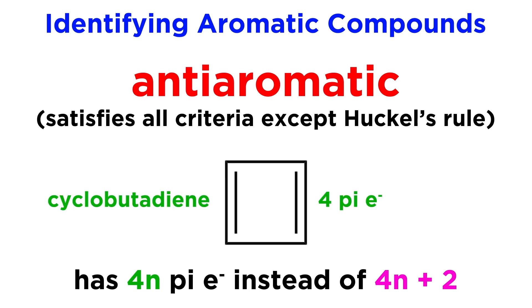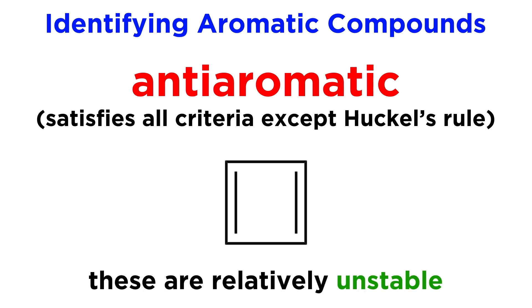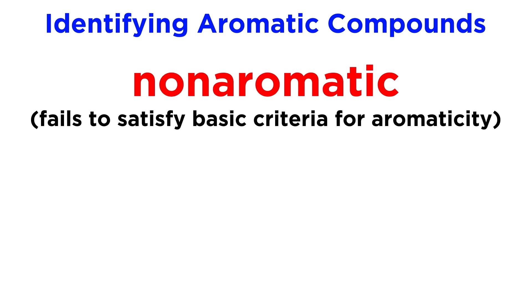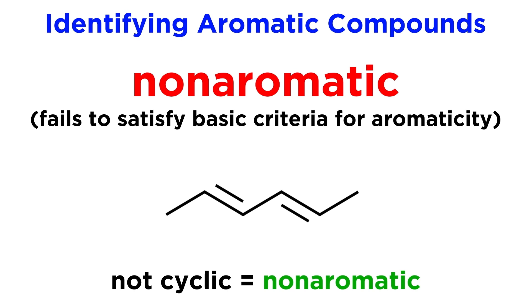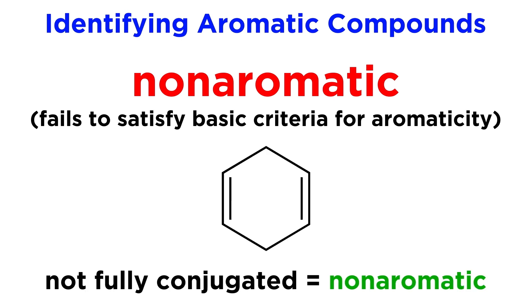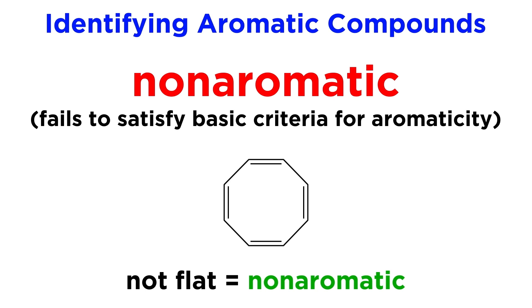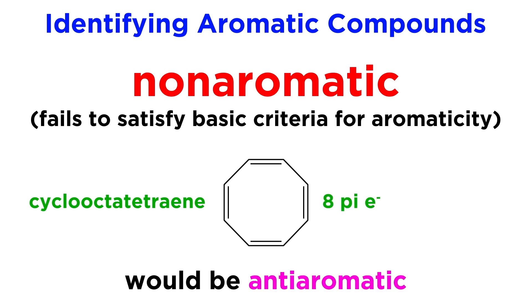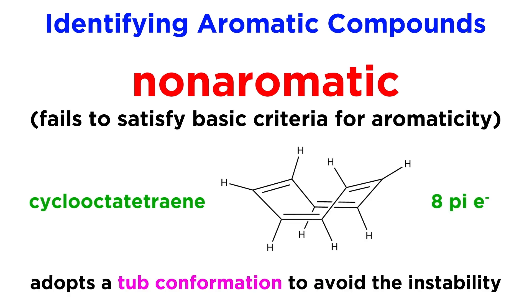This is something like cyclobutadiene, with its four pi electrons. So it's like it almost qualified as being aromatic — it just doesn't satisfy Huckel's rule. Anti-aromatic compounds are relatively unstable. And if a molecule fails to satisfy any of the other criteria, it is simply non-aromatic. Take cyclooctatetraene — this seems like it would be flat like a stop sign, but in fact, because it has 8 pi electrons, it would end up being anti-aromatic. So to escape this instability, it will adopt a tub-like conformation, and because it is therefore not flat, this is non-aromatic.